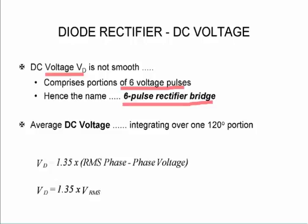The average DC voltage, we get that by integrating over a 120 degree portion. And then we end up with the formula VDC voltage is 1.35 times VRMS.